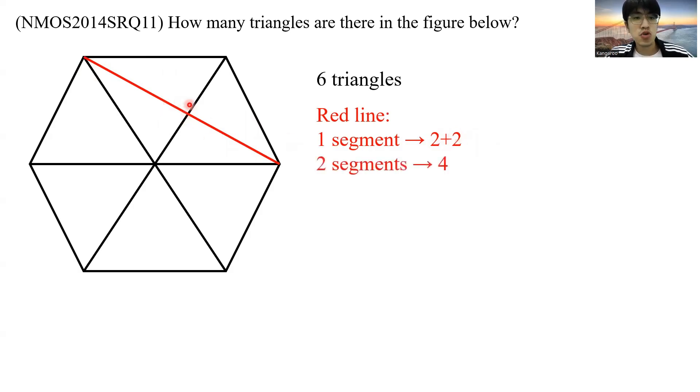Now, if I combine these two line segments to get this whole line, this entire line, how many new triangles can I get? Let's see, we have this big one over here formed by this entire red line, and the other one over here, that's two, and here's another one, three, and here's another one. So four. So we see that as I add in this red line, the one segment will give me two plus two, four more triangles. And the two segments in total, this entire line will give me another four triangles.